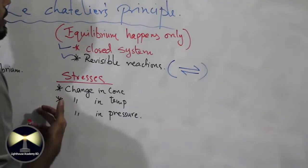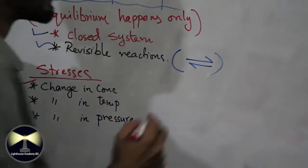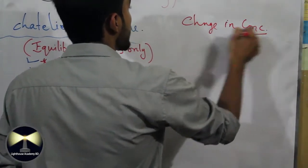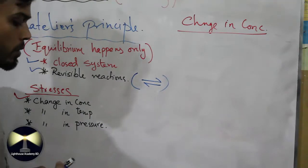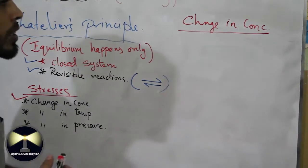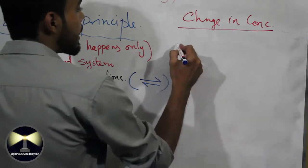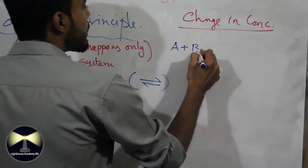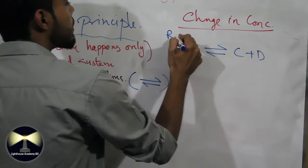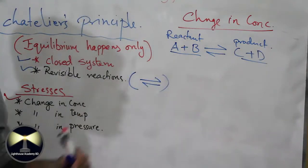Now, what happens to a reaction if these stresses are applied? Let's go to stress number one: change in concentration. Suppose we write a reaction: A + B gives C + D. A and B are the reactants, and C and D are the products. Now what happens when we change the concentration of either the reactants or the products?